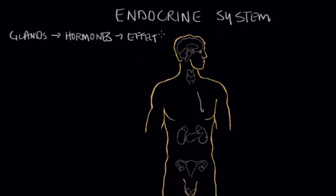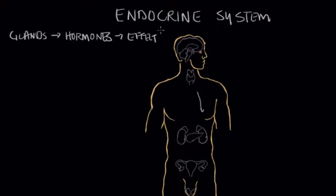The endocrine system and the nervous system are really related — almost like cousins. They're similar but unique. The nervous system is like the hare in the story of the tortoise and the hare, and the endocrine system would be the tortoise. The nervous system is really fast, with results in milliseconds, whereas the endocrine system is fairly slow, and it might take minutes to even days or weeks to see the effects of these hormones.